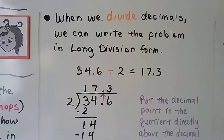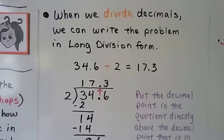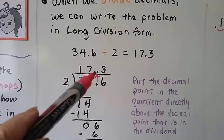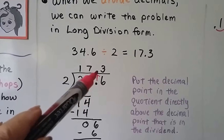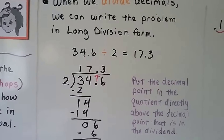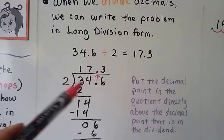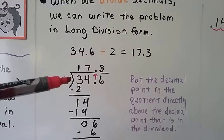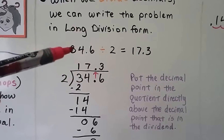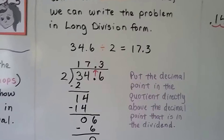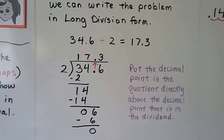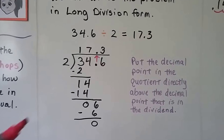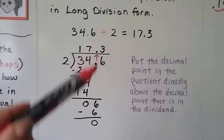When we divide decimals, we can write the problem in long division form. The decimal point is going to go straight up from where it is in the dividend right up into the quotient. The dividend is on the inside, the divisor is on the outside, and the quotient's the answer. So if it's written as a fraction, we can rewrite it into long division form. The number being divided goes on the inside — that's the dividend. We put the decimal point in the quotient directly above the decimal point in the dividend, and just divide with long division as we would normally.